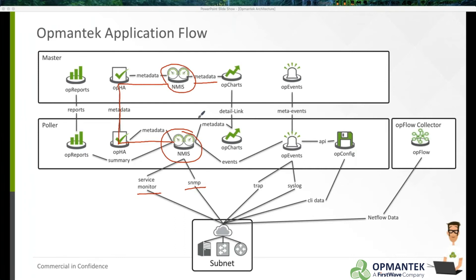It's important to note that this is metadata, not fully detailed data, so OP Charts has a view of the health and welfare of devices. If you want to drill into detailed historical information or get detailed flow information about interfaces, OP Charts will make a request from the master down to the appropriate polling server responsible for that device and pull that information back up. You'll also notice that OP Events — Opmantic's automatic high-end event management system — can integrate directly through meta events and the OP Events API directly to the master server.